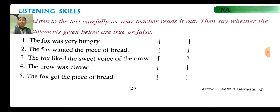The fox told the crow to sing and dance, one at a time, because she wanted the piece of bread from the crow. So for the third number — the fox liked the sweet voice of the crow — it is false. In the bracket you have to write F-A-L-S-E, false.